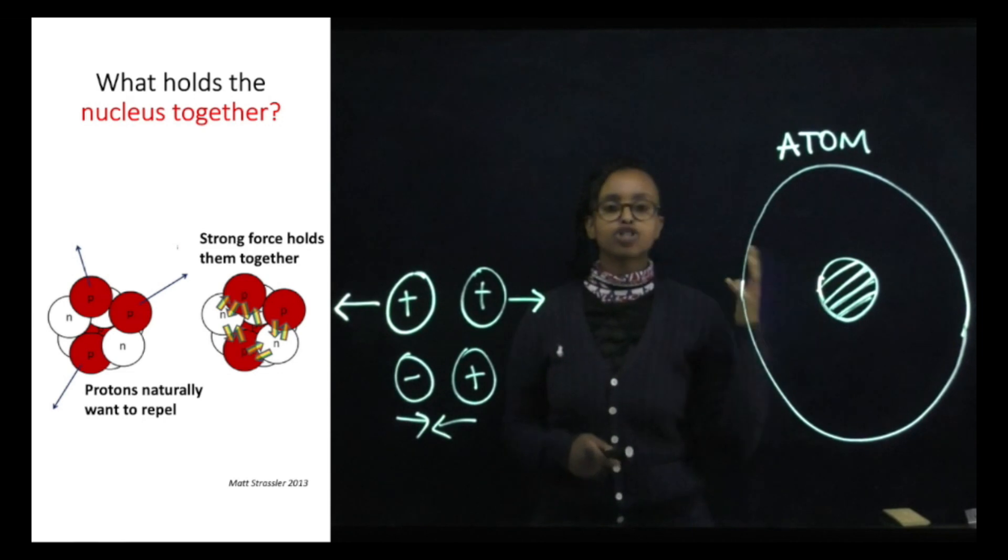So what is it that's keeping this nucleus so close together? Because it's only really consisting of positive charges and neutrons, which wouldn't make a difference.